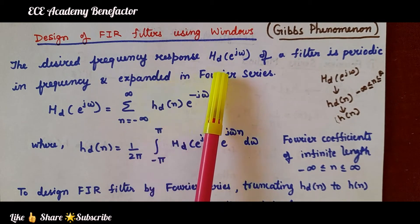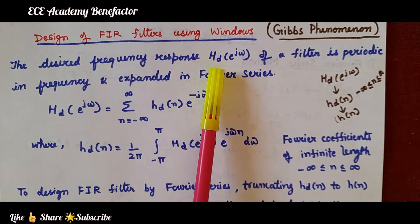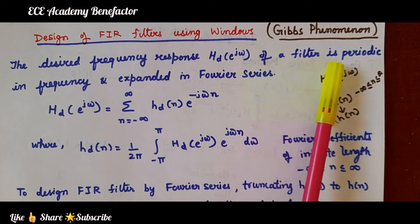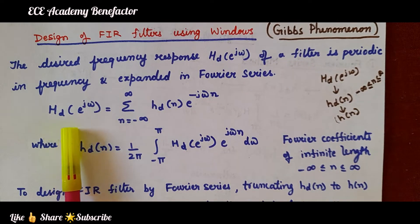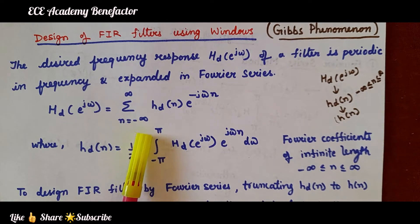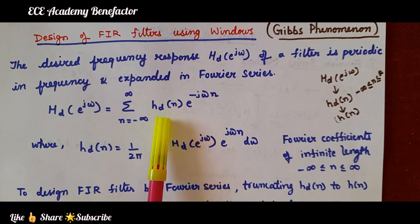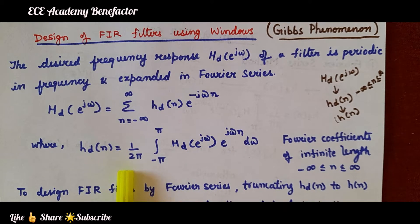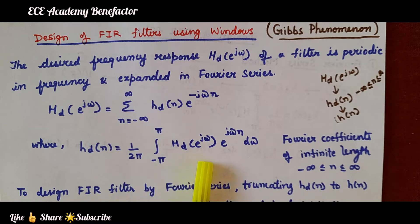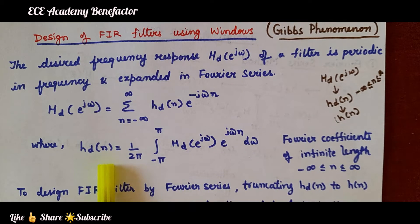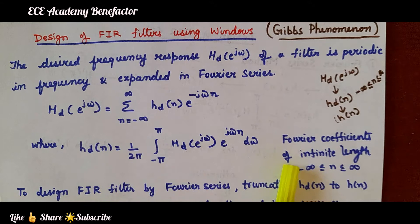Here, the desired frequency response H_d(e^jω) of the filter is periodic and is given. The Fourier transform equation is written as: H_d(e^jω) = summation from n = minus infinity to infinity of H_d(n) · e^(−jωn). This is the Fourier transform equation and we need to find H_d(n). We find the impulse Fourier transform given by (1/2π) · integral from −π to π of H_d(e^jω) · e^(jωn) dω.